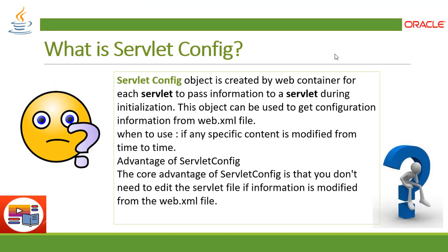Now, ServletConfig. The ServletConfig object is created by the web container for each servlet to pass information during initialization. This object can be used to get configuration information from web.xml. Use it when specific content is modified from time to time — this interface helps you update it accordingly. In contrast to ServletContext, where parameters are defined with context-param, ServletConfig uses init-param for parameters that can change over time, and a new object is created during runtime deployment.